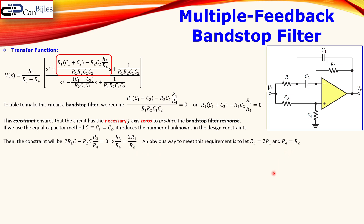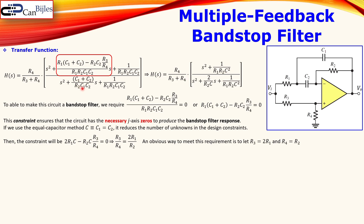With these substitutions, the transfer function simplifies. The R4/(R3 + R4) term remains, and the s-squared term becomes s² + 1/(R1·R2·C²). The bandwidth term simplifies to 2/(R2·C), making this expression much more usable in our design equations.